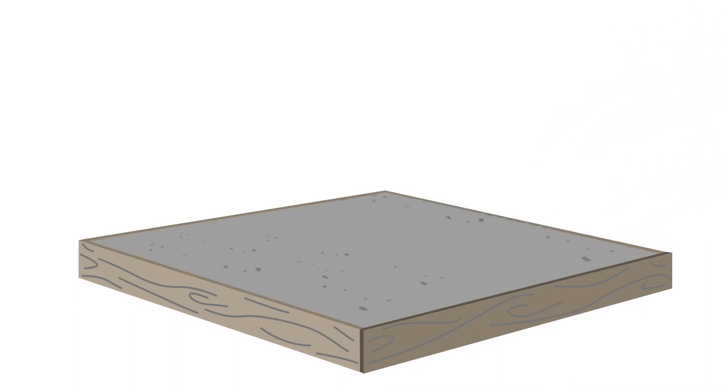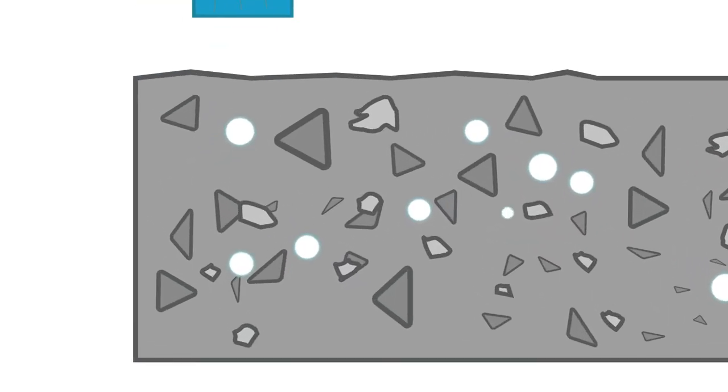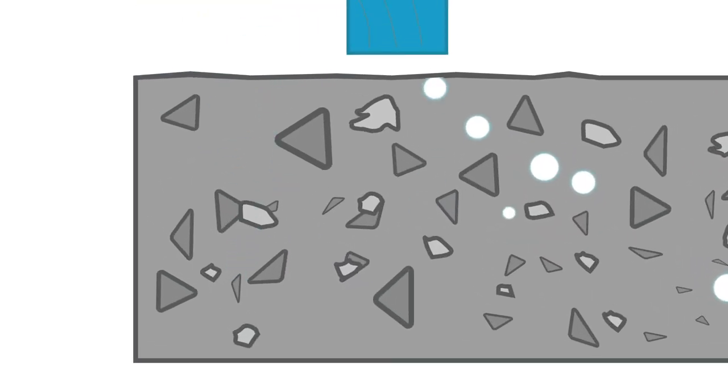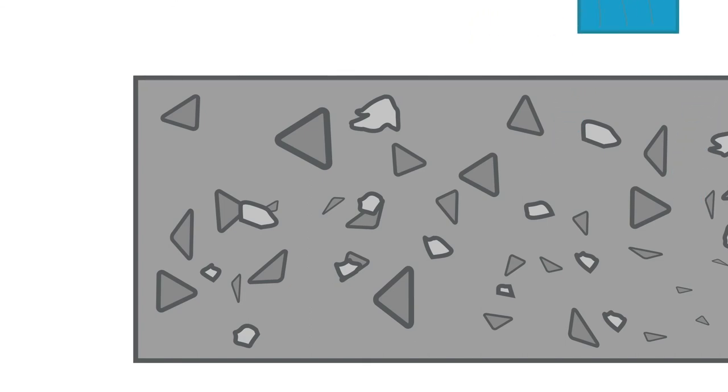When concrete is initially placed, it contains air bubbles which must be removed to ensure strong, durable concrete. Tamping the top of the concrete like this will help to remove trapped air bubbles. You can also tap the side forms.